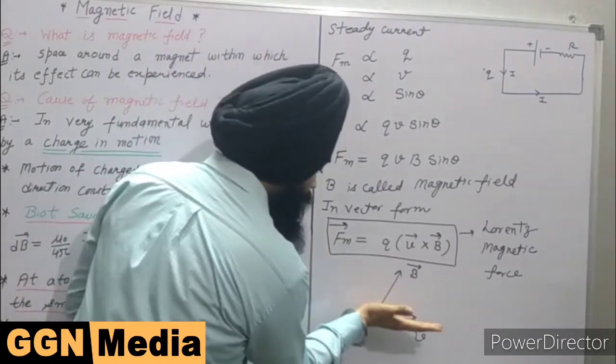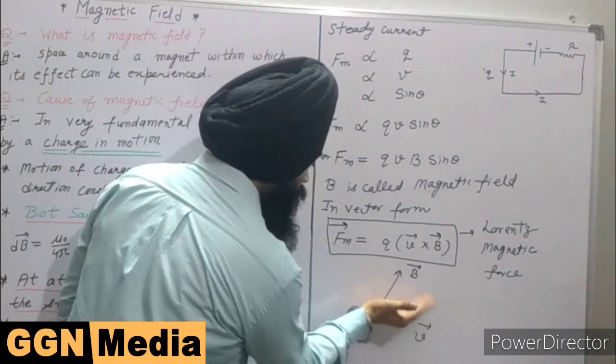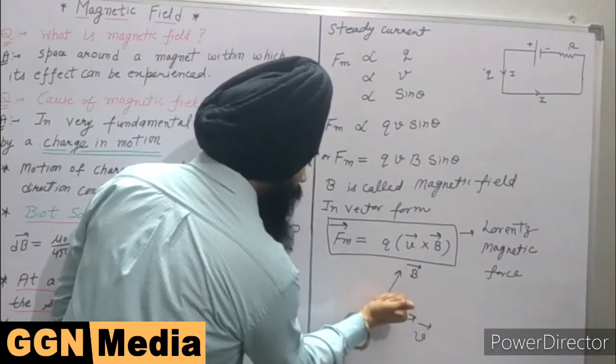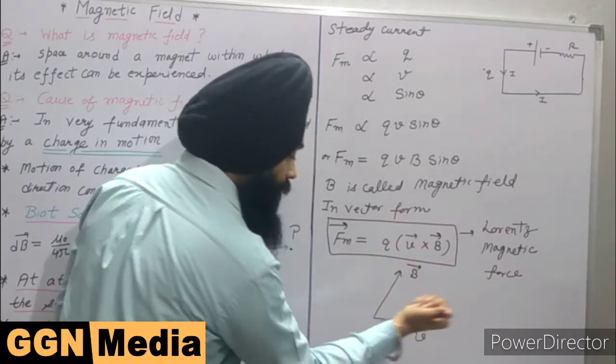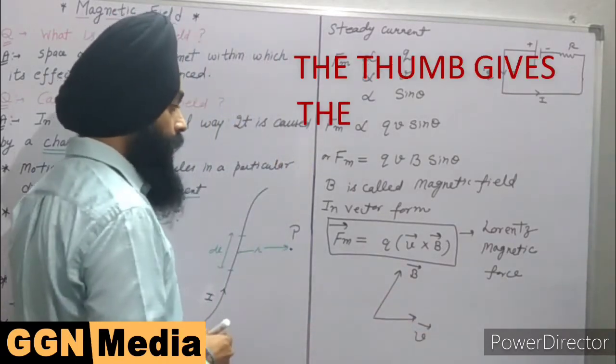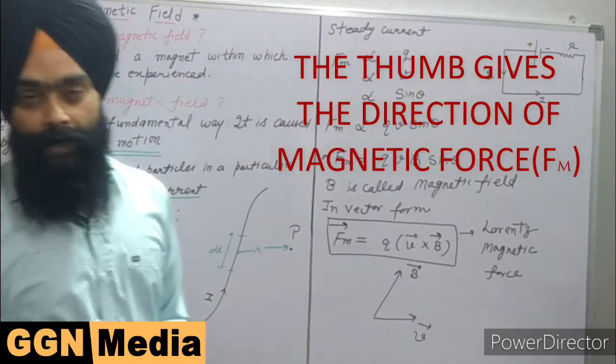then using the right hand, we can curve the finger from velocity to B and the thumb expresses the direction of magnetic force.